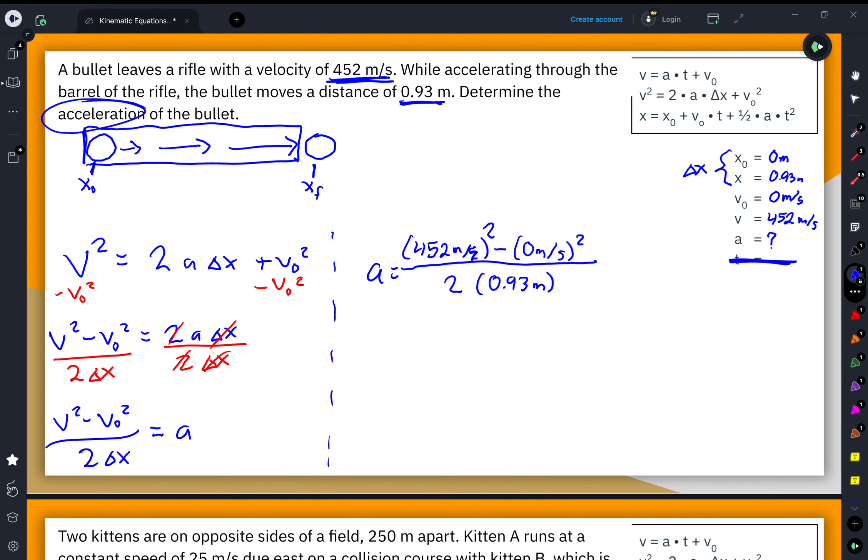Once I have this all set up, I'm going to grab a calculator to figure out what these values are going to be. So my acceleration is going to be equal to 452 squared, which is 204,304 meters squared over second squared minus 0 squared, which is 0 meters squared over second squared. All of that is going to be over the 0.93 times 2, which is going to be 1.86 meters.